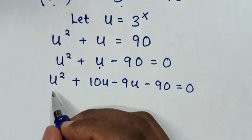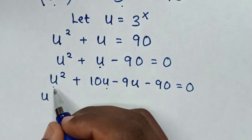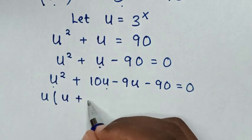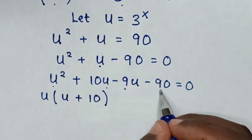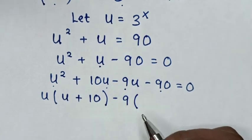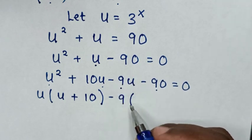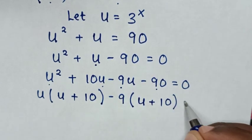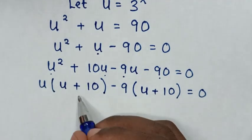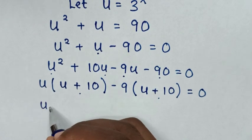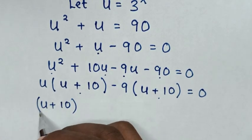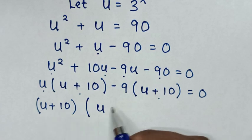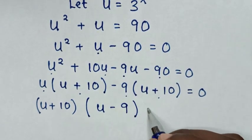In the next step, u is common in the first two terms, so we take u out of the bracket: u squared divided by u is u, and 10u divided by u is 10, so plus 10 in bracket. Then negative 9 is common in the last two terms, so we take negative 9 out of the bracket, giving negative 9 times bracket u plus 10, equal to 0.